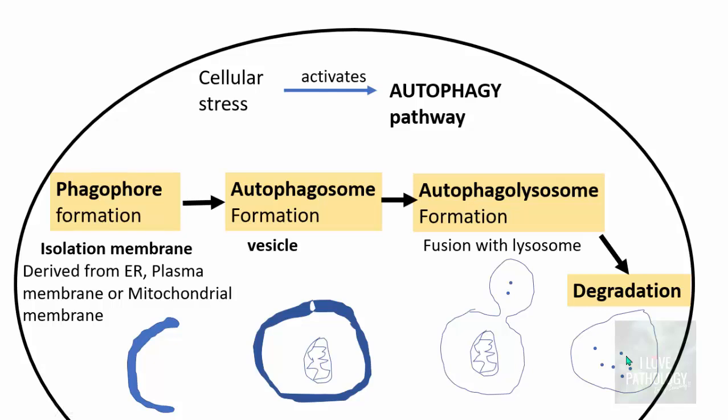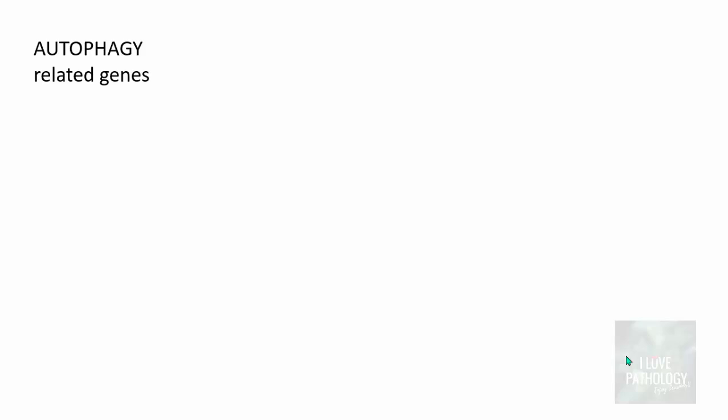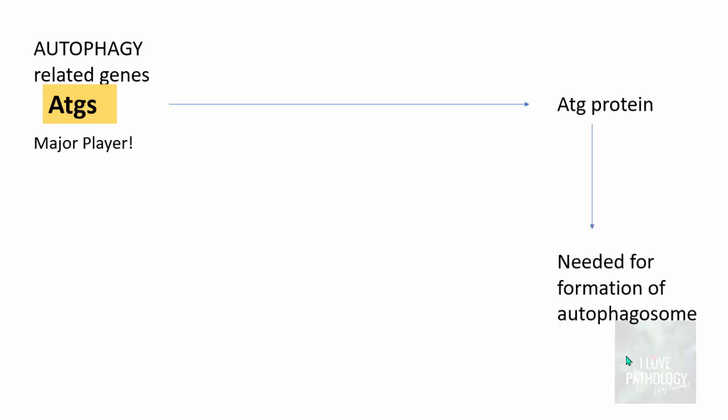Now let us understand the mechanism in a bit more detail. The most important thing the Japanese cell biologist demonstrated was autophagy-related genes. He identified that there are genes involved in autophagy and called them ATGs — autophagy-related genes. These are the major players in autophagy, which encode for a set of proteins called autophagy proteins or ATG proteins. These autophagy proteins are the ones needed for the formation of the autophagosome.